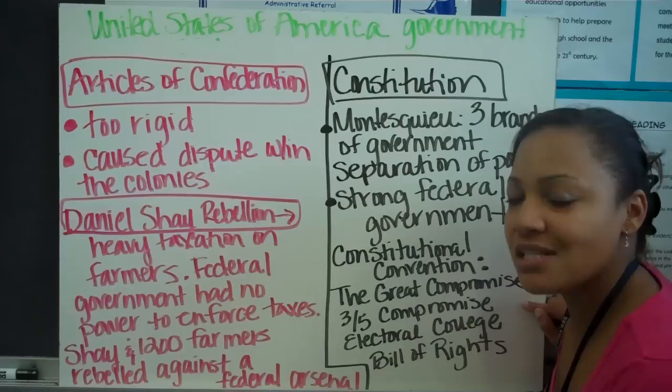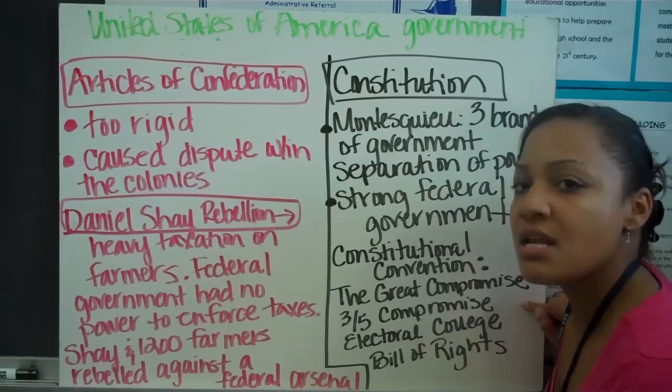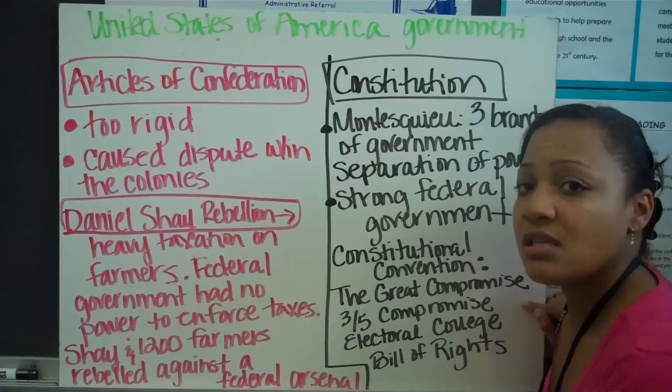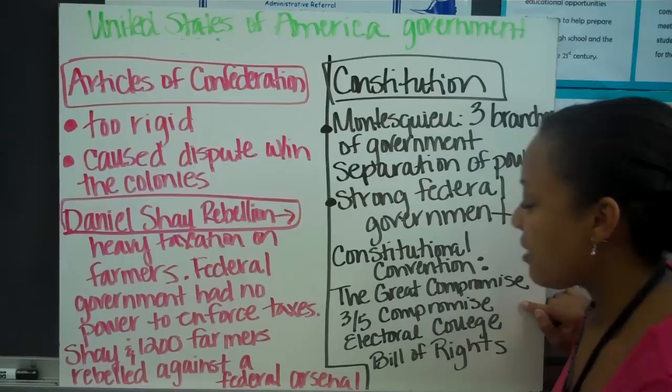The Three-Fifths Compromise arose because southern states wanted to count slaves as part of their population for representation. The northern states disagreed, noting there were more slaves in the south than the north. The compromise reached was that 5 slaves would be counted as 3 persons, and that made everyone happy.